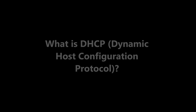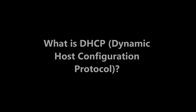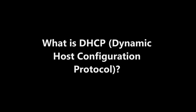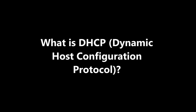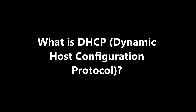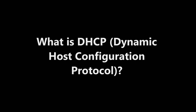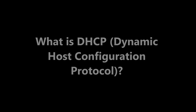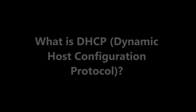Question number eleven: what is DHCP? DHCP, also known as Dynamic Host Configuration Protocol, is used to allocate IP addresses for every computer on a network. Any computer connected to the network will get its own unique IP address assigned by the DHCP server.